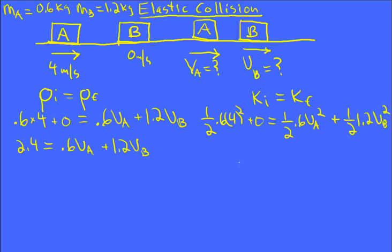And so we can simplify this a little if you'd like. This comes out to 4.8. And so that's 0.3 VA squared plus 0.6 VB squared. And so now we have two equations, two unknowns. The rest is algebra, but it's not trivial algebra.